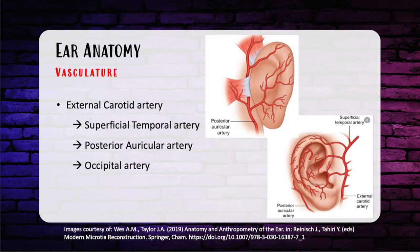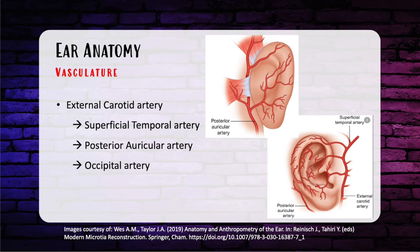Moving on to anatomy — the dominant blood supply to the ear is the posterior auricular artery, and this supplies the anterior and posterior surface of the ear. There is also minor blood supply from the superficial temporal artery; a small branch crosses the superior helix to supply blood to the triangular fossa. Another minor contribution is the occipital artery, which supplies the posterior ear. The posterior auricular artery and the superficial temporal artery are both branches of the external carotid artery.